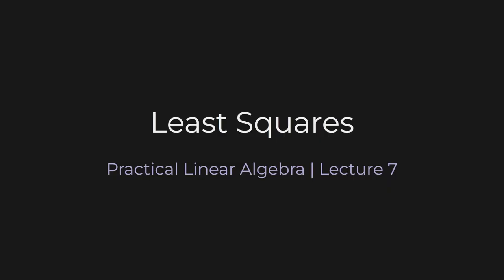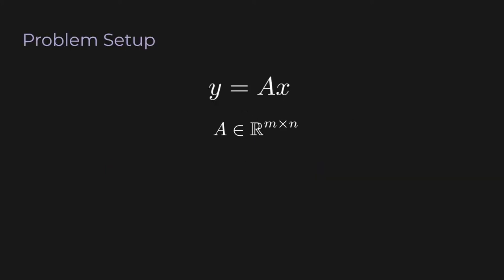Finally we get to least squares. All the work we've been doing so far is going to finally pay off and things are really going to start coming together. So here's our problem setup. We have y equals Ax where A is a vector in R m by n. So x and y are vectors here. For a given y we want to solve for x. So y and A are given to us and we want to isolate and solve for x.